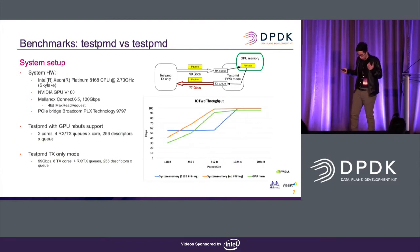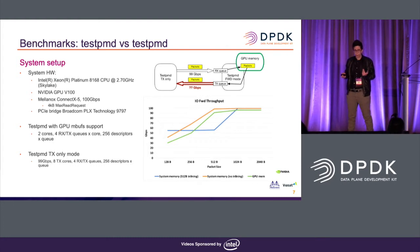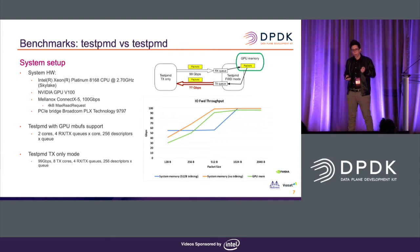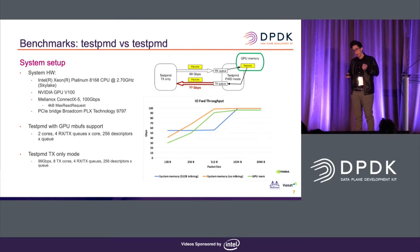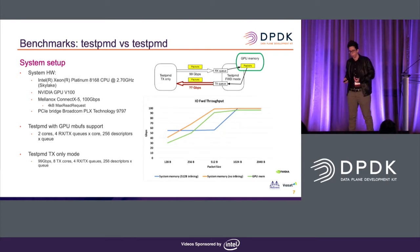The GPU DPDK package includes two examples. The first is Test PMD, the standard test PMD improved with GPU memory support, so that during IO forwarding you can use GPU memory instead of system memory. In the benchmark, one machine runs Test PMD as a generator in transmission only, and the other runs Test PMD doing IO forwarding with GPU memory. With 1K or 2K packets you approach full throughput, but with small packets the lack of inlining support with GPU memory can reduce throughput.